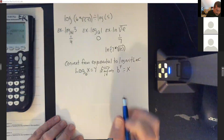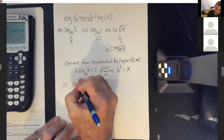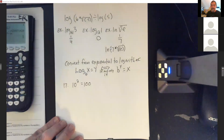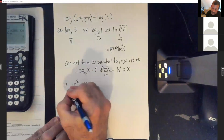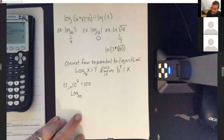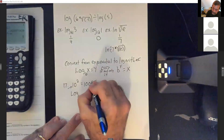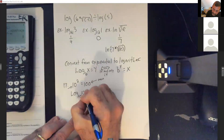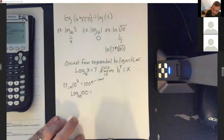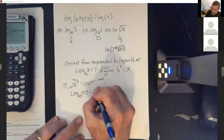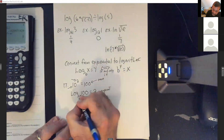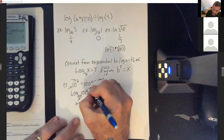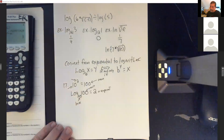Example: 10 squared equals 100. To rewrite, write log — the base is the number getting hit with the exponent, which is 10. So this is log base 10. The result was 100, so that follows right after log base 10. The exponent is 2, so log base 10 of 100 equals 2. Remember: that is always your exponent, that is always your base, and this is always the result.